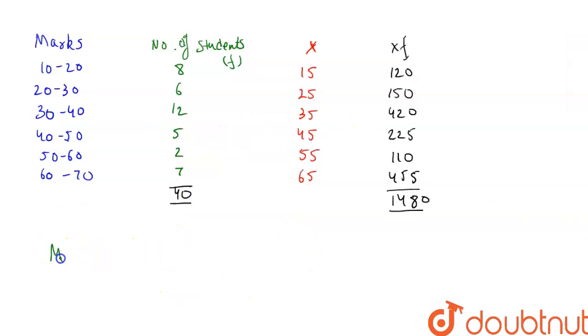So formula for mean X bar is equals to summation XF upon summation f. So summation XF is 1480 divided by f is 40. So this gets cancelled and we are left with 37. So 37 is the mean.